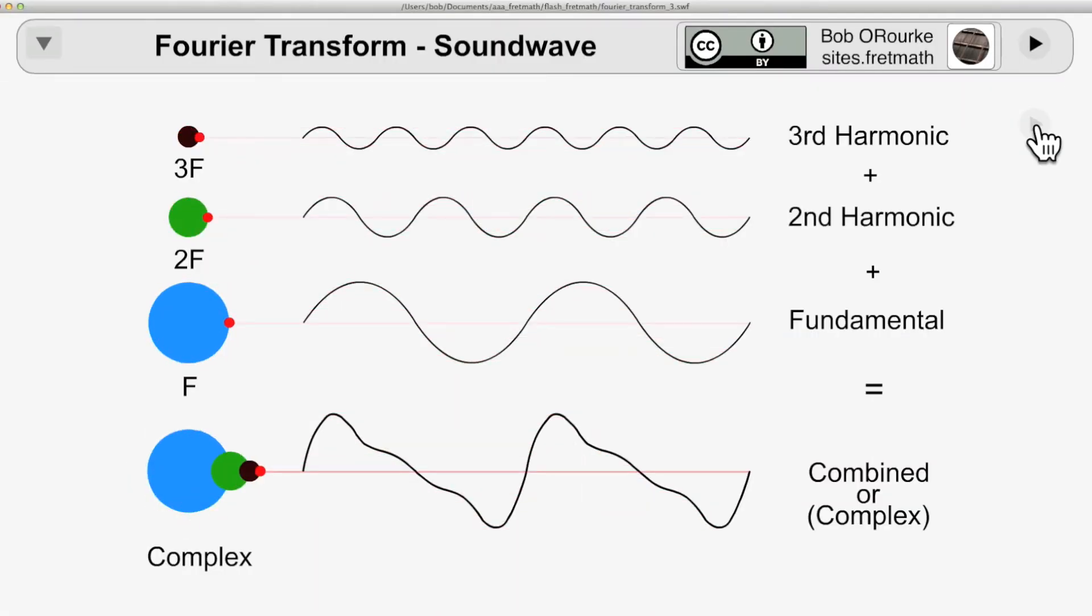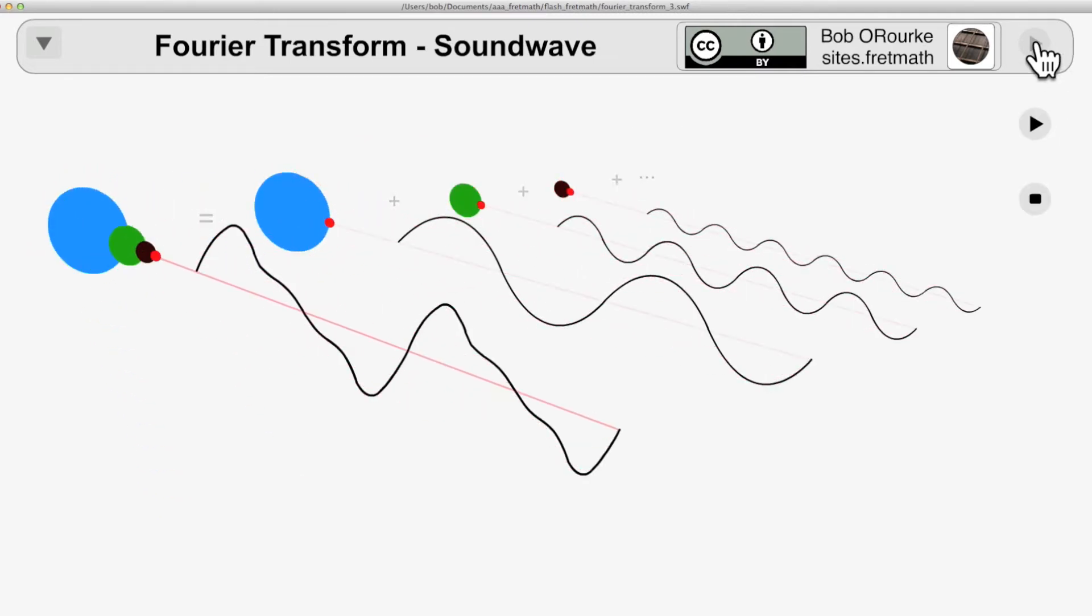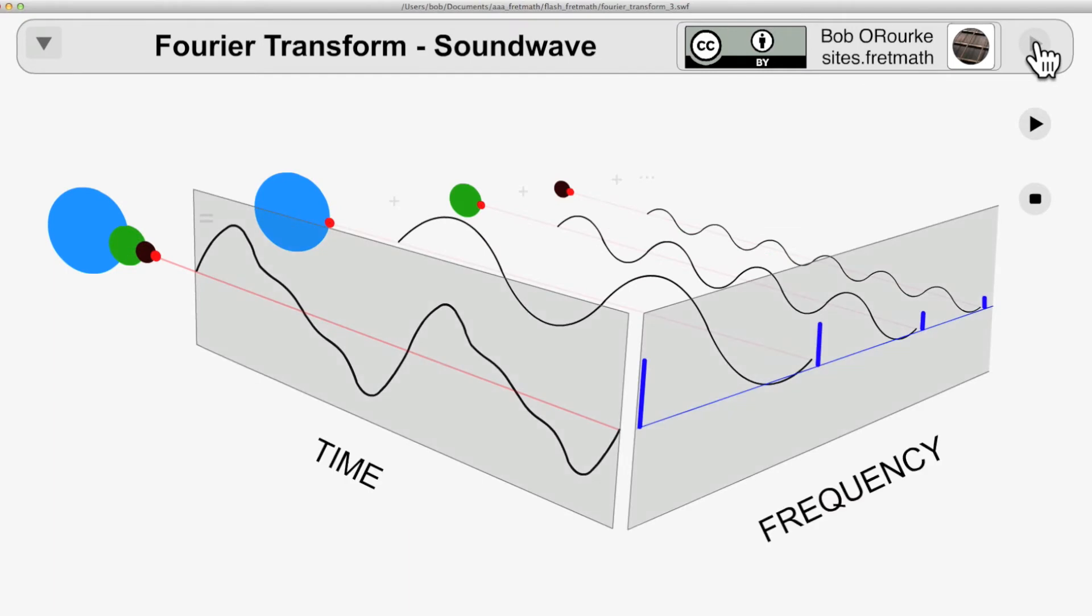The Fourier transform is a multiplication process, and that'll give you the relative strength of each of those frequencies.